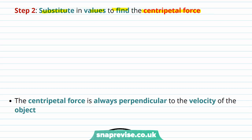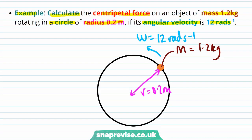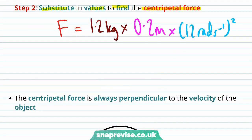So the centripetal force is equal to the mass of the object, 1.2 kilograms, times the radius, 0.2 metres, times the angular velocity, which is 12 radians per second squared. And if we put all these numbers into our calculator, we find that the centripetal force is equal to 34.56.